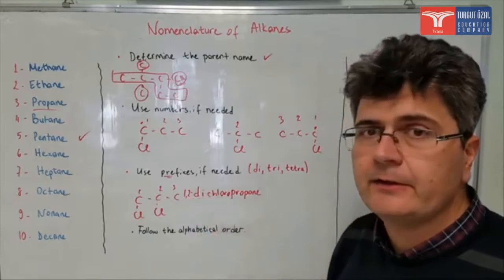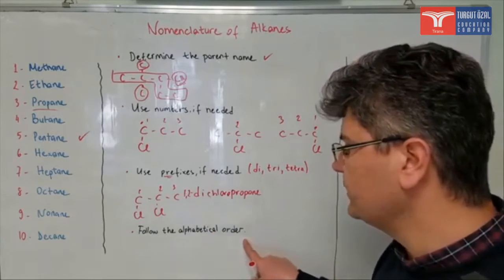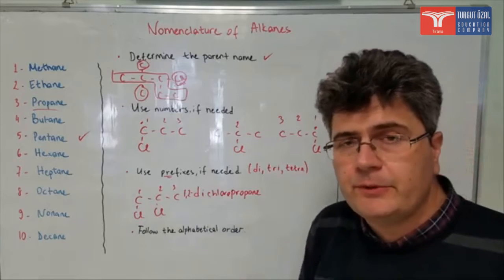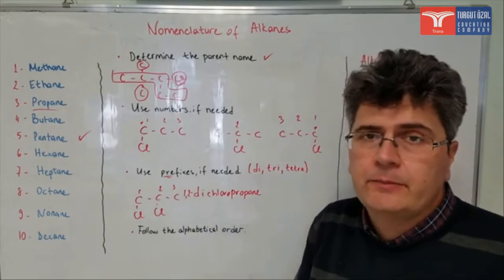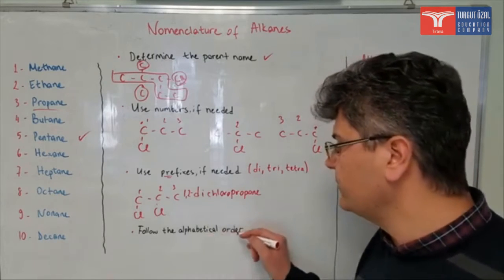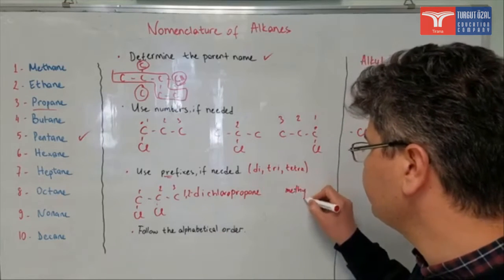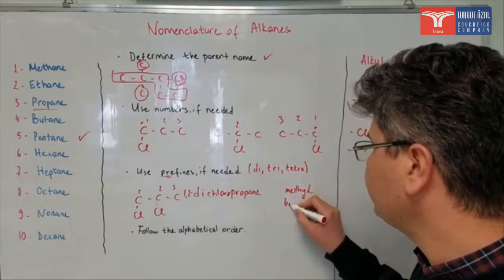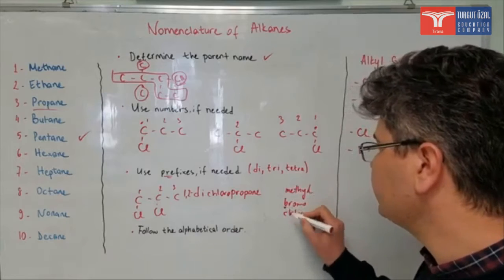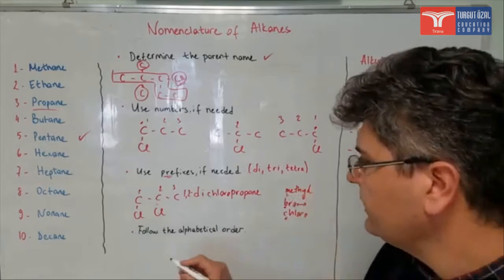And finally, the last rule: follow the alphabetical order. So if you have more than one branch, when you mention them you need to follow alphabetical order. For example, if you have a methyl group, bromine, and chlorine attached, you first mention bromine, then chlorine, then the methyl group.